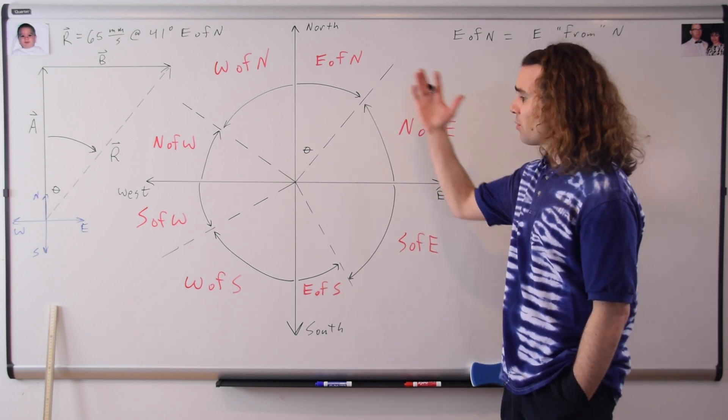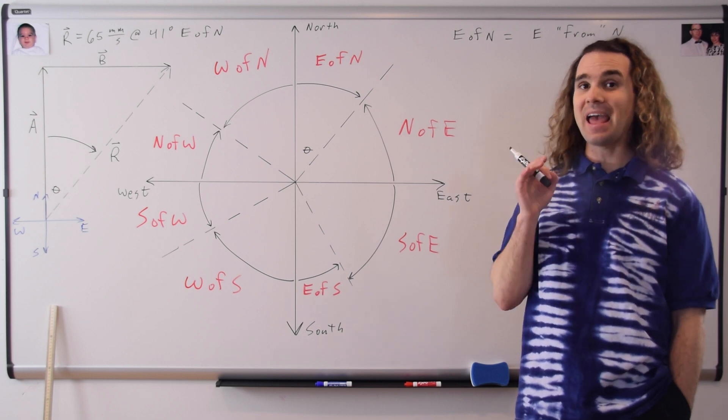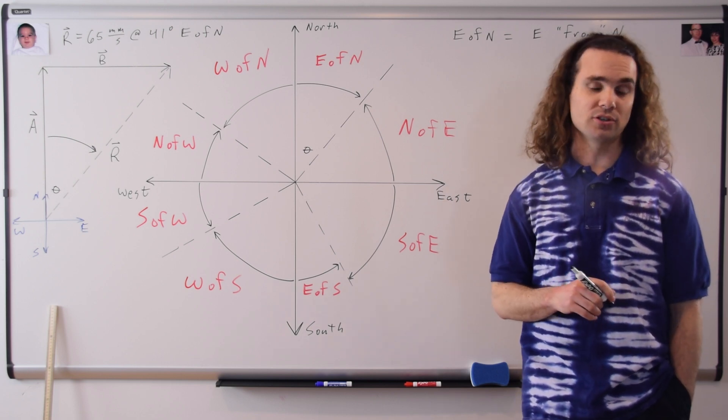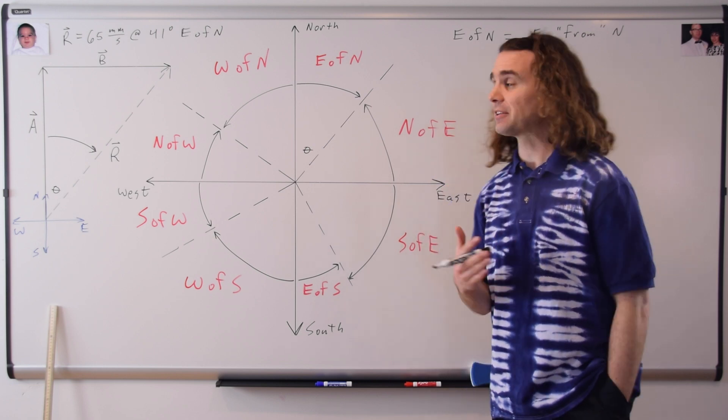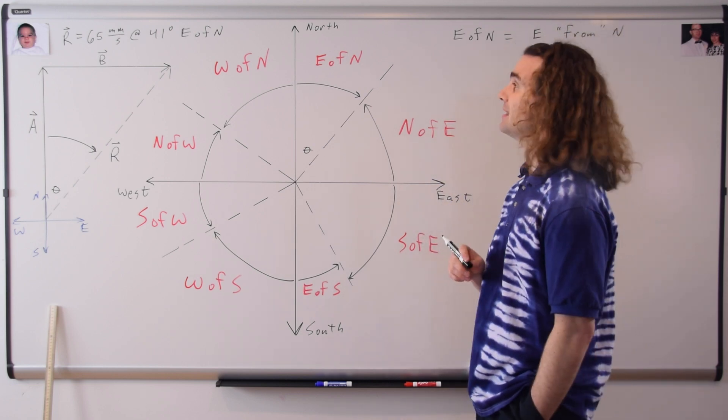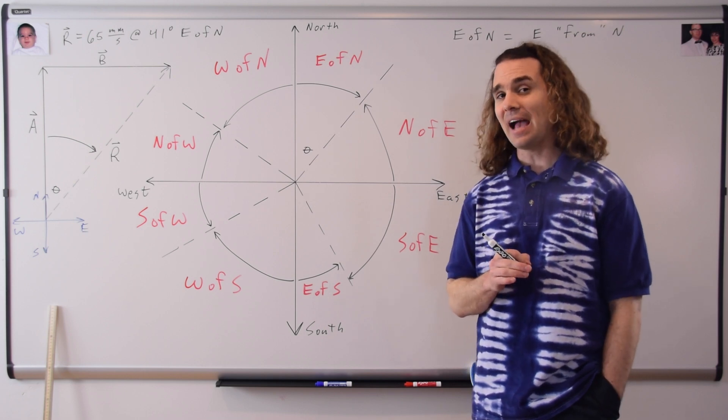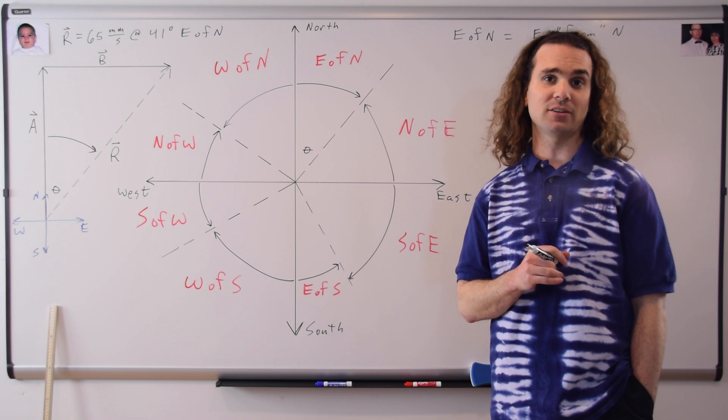And you can now see on the board, in red, are eight options for describing the direction of an angle using cardinal directions. Now, let's return back to our original resultant vector, which was 65 millimeters per second and an angle of 41 degrees east of north. There is actually a second equivalent way to describe the direction of this resultant vector.